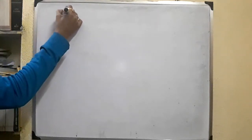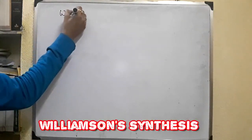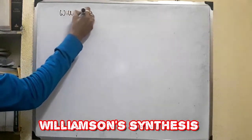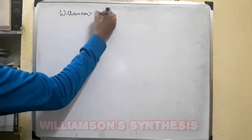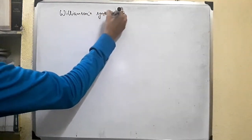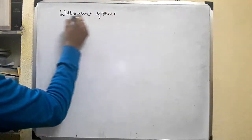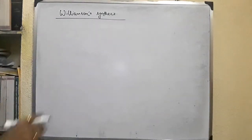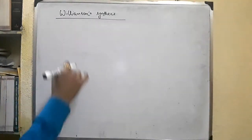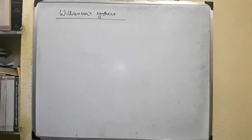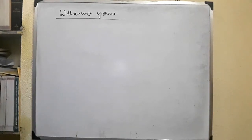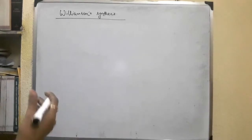In this video let's discuss Williamson's synthesis, which is one of the best methods for preparing symmetrical and unsymmetrical ethers. In this method, sodium alkoxide or potassium alkoxide is heated with an alkyl halide to form an ether.